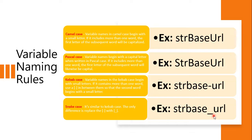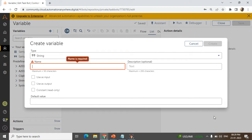These are the four types of variable naming rules, but the most highly used is camel case. You start with a small letter 'str', and if you have two different words, the first letter of the next word should be a capital letter, followed by small letters. I hope you have understood this naming rule. If not, please watch other naming rule videos.